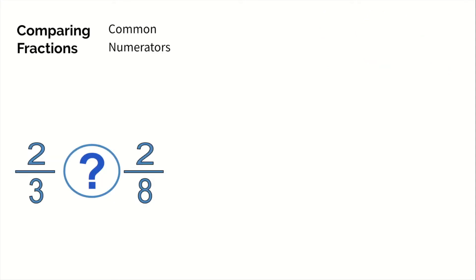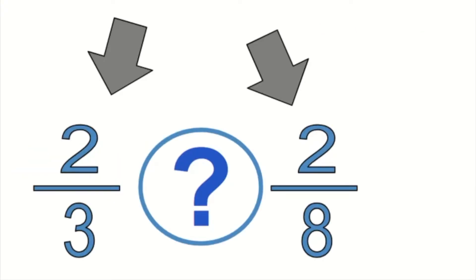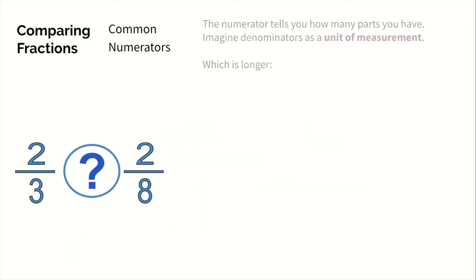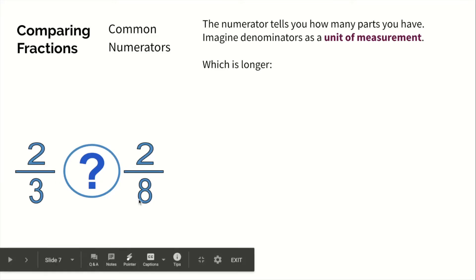Common numerators are a little bit different. Again, as we mentioned before, the numerator tells you how many parts you have, but the denominator tells you how many parts make up the whole. But for this video, we're going to imagine that the denominator tells you a unit of measurement. Now in this situation, you have the same number of parts, but your unit of measurement is different.